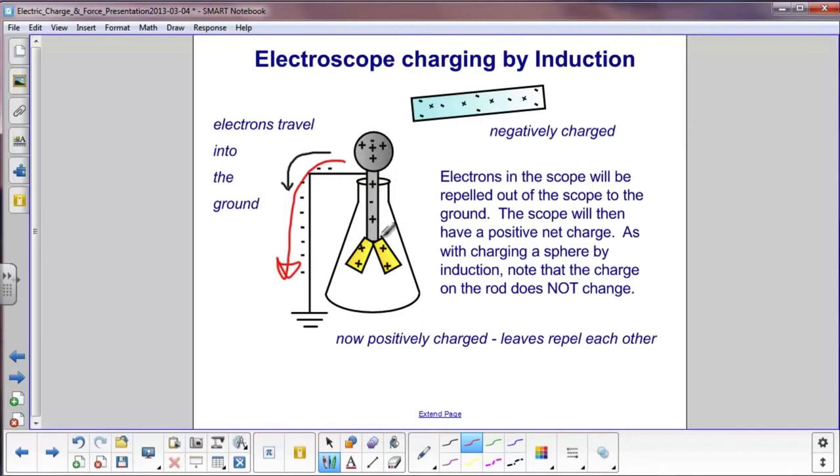Thus leaving a net positive charge on the electroscope. So, the gold leaves now have positive charges and they will repel each other. Note, when we talked earlier about the spheres and charging by induction, the charge on the rod that charged them did not change.